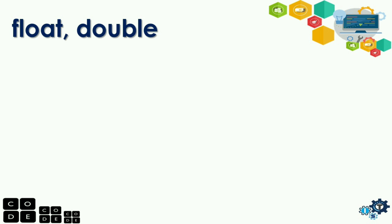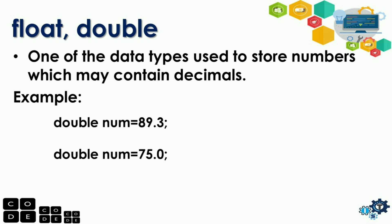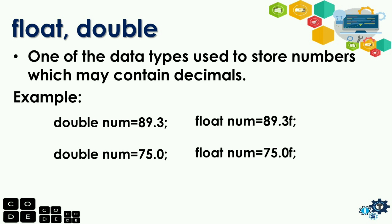Next, we have float and double — data types used for storing numbers which may contain decimals. Example: 'double num = 93.3;' — that is for double. For float: 'float num = 89.3F;' with an uppercase F at the end. The difference between float and double is that float has the F suffix while double does not. Float is used when you have limited memory, but the most commonly used today is double, since modern technologies no longer limit memory as much. So float or double is for decimal numbers.